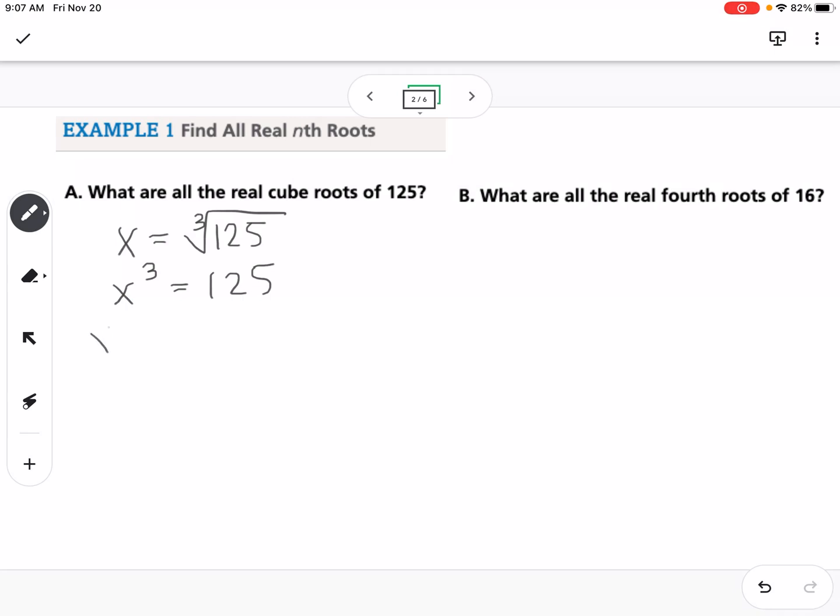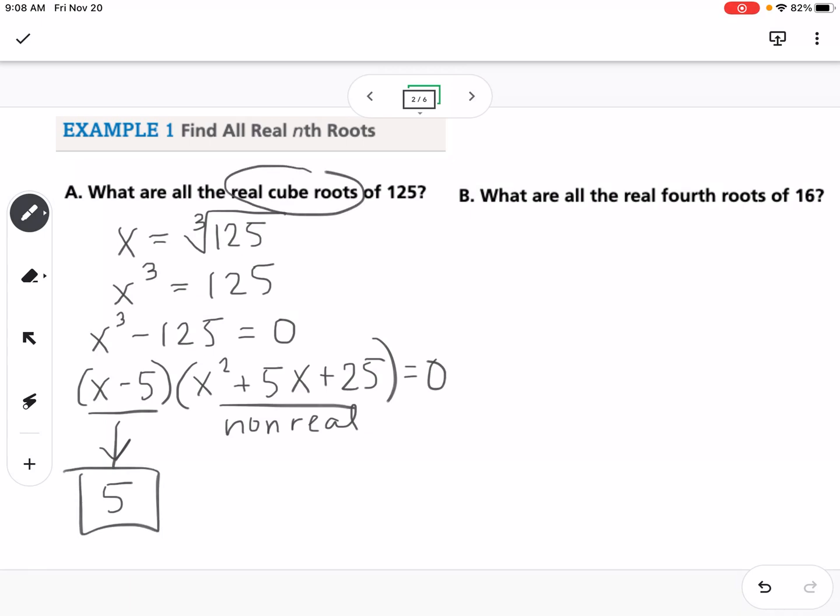We could then solve this, so we could bring the 125 over to the other side, and then we could factor this. This is one of those difference of cubes, so if you don't have it memorized, you can always look up what is the pattern for difference of cubes. So difference of cubes is x minus 5 times x squared plus 5x plus 25. So then this part right here is going to give us a solution of 5. This right here is non-real. So it says what are all the real cube roots of 125, so our only solution there would be 5.